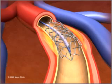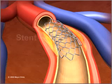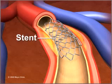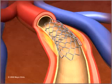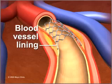Both catheters and the wire are then withdrawn. About 70 to 90 percent of coronary angioplasty includes placement of a stent, a wire mesh tube that holds open weakened arteries. The stent may prevent re-narrowing after an artery is widened, and it stays in place permanently as the blood vessel lining heals over it.